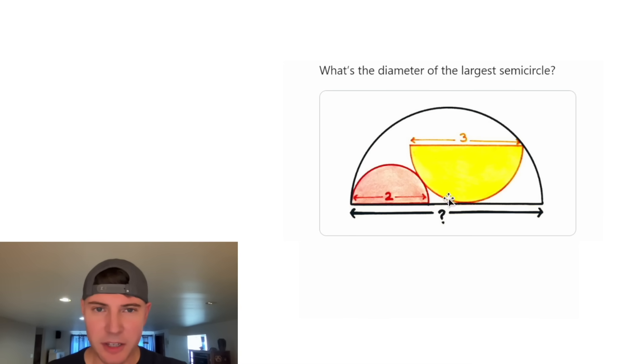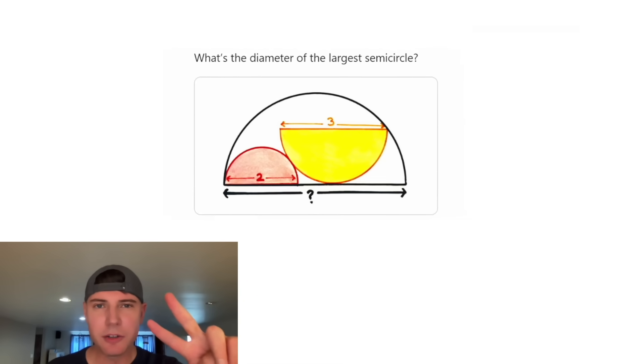I think it's safe to assume that the yellow semicircle is tangent to this red one right here, and tangent to this diameter right here. If you want to try it on your own, pause right now, because I'm going to solve it in three, two, one.